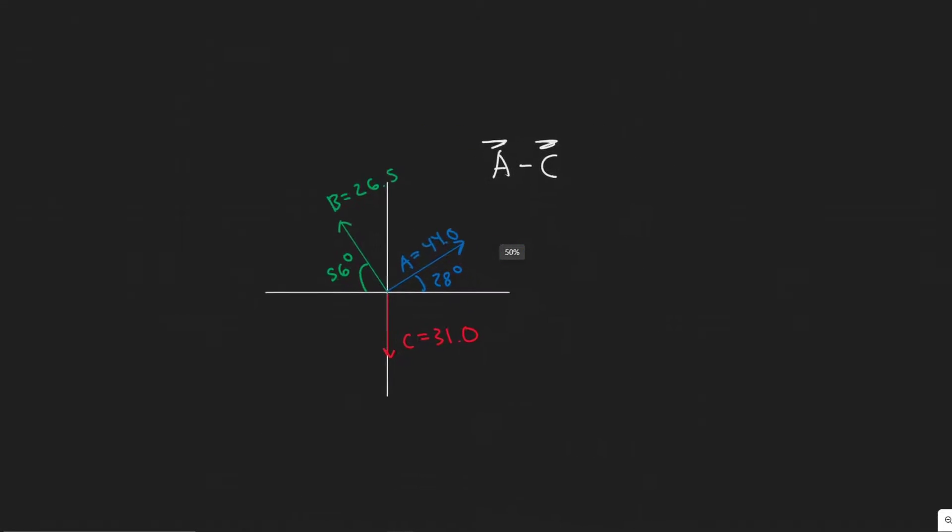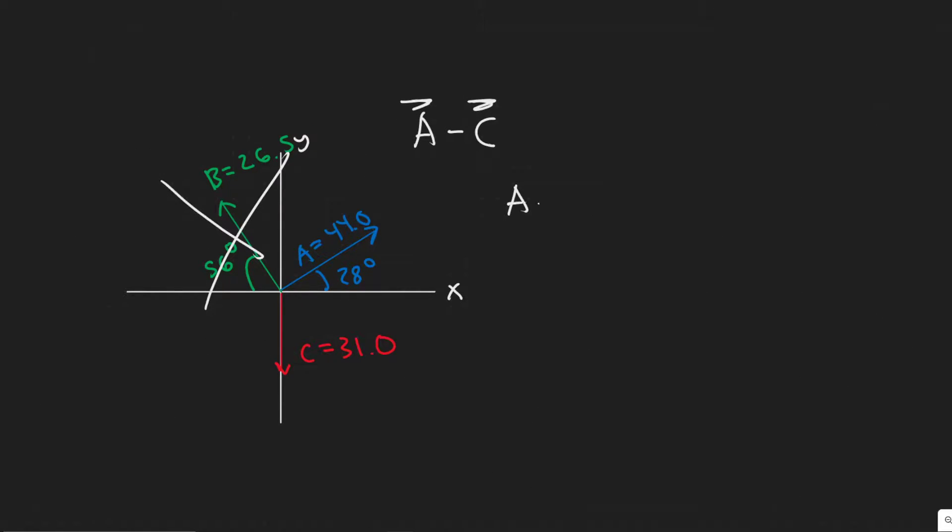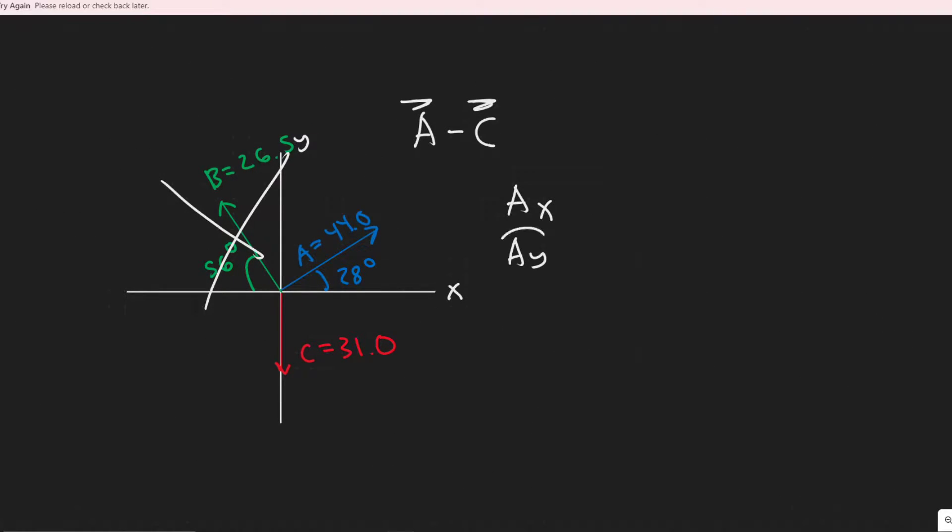Whenever you add or subtract vectors, in order to do that, you have to first get them into their components. So we're only dealing with A and C here, so we can kind of just imagine B isn't there. But we need to find the x and y components of A and C. When I'm referring to the x, I'm basically referring to this axis here, and then for the y is going to be this axis.